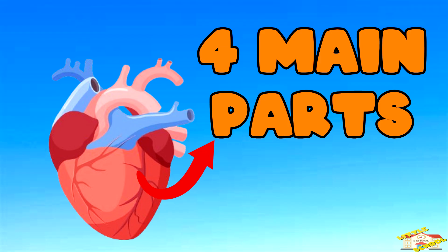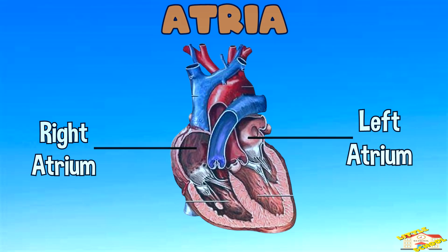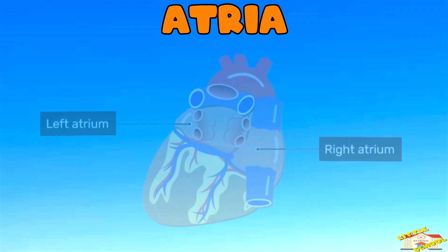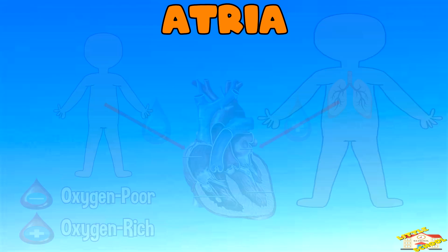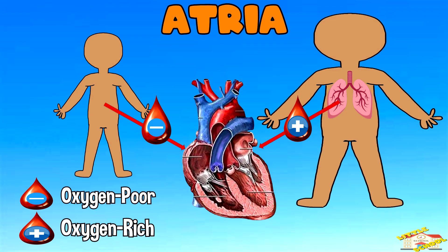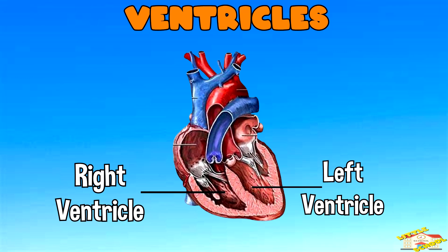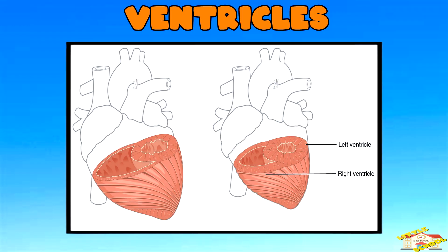Atria, or the right and left atrium — the atria are the two upper chambers of the heart. They receive blood coming into the heart. The right atrium receives deoxygenated blood from the body, while the left atrium receives oxygenated blood from the lungs.